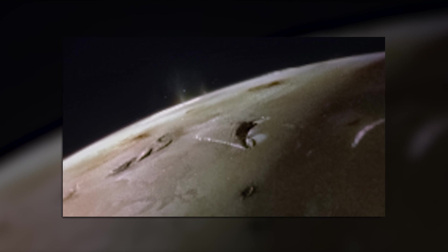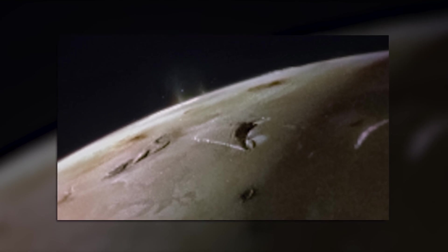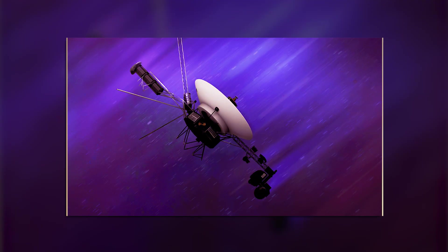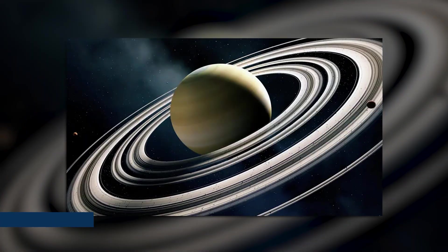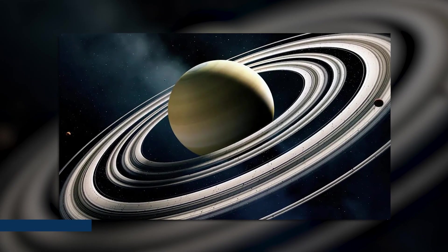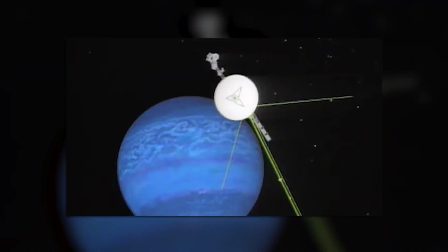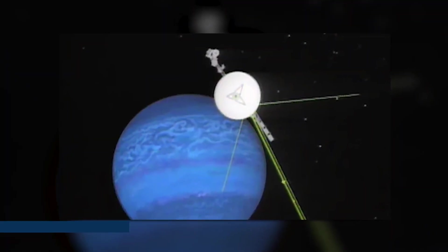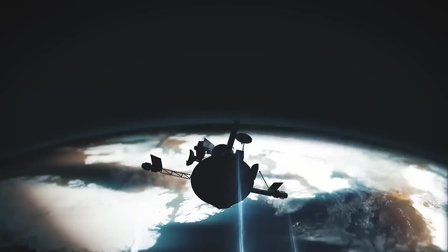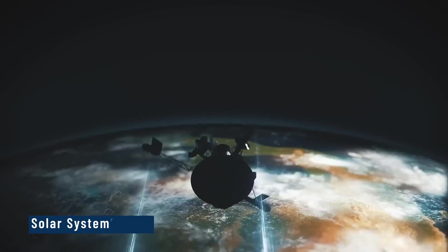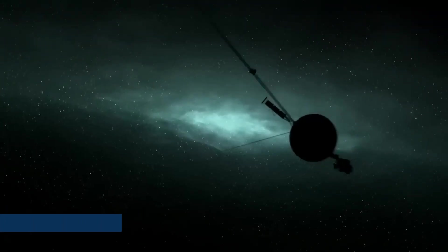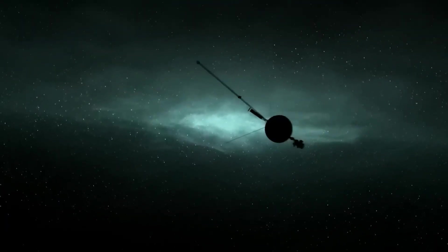At Jupiter, Voyager 2 unveiled volcanic activity on Io, the first of its kind observed beyond Earth. Saturn's moons and rings were studied in unprecedented detail. But the mission's most remarkable feat came after the Neptune flyby in 1989. Quietly, Voyager 2 slipped beyond the solar system's edge, beginning a new chapter: exploring interstellar space.